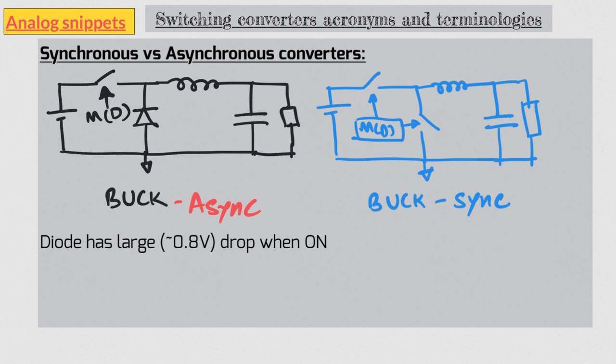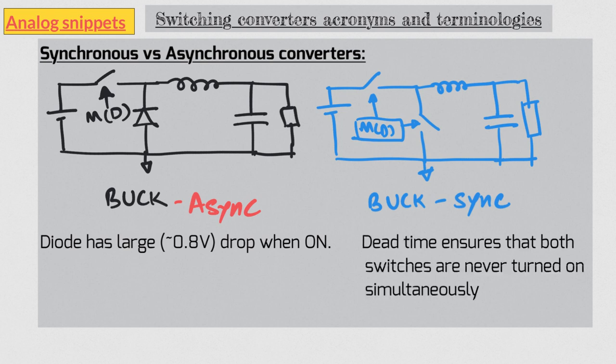In synchronous converters we need to make sure that these switches are never turned on simultaneously. We first turn off the switch and then turn on the other switch, and in doing so we introduce so-called dead time. This type of switching is also known as break-before-make switching. The switch closer to supply is known as high side switch and the switch closer to ground is known as low side switch. Low side switch is almost always an NMOS switch, while high side switch can be realized using both NMOS and PMOS.